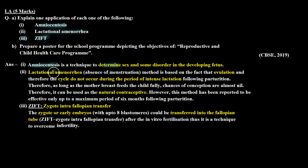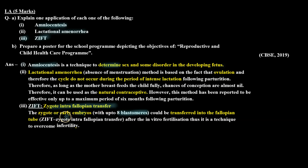Third part: ZIFT — zygote intra-fallopian transfer. This is a type of ART technique in which we carry out in vitro fertilization, meaning fusion of female and male gametes outside the female body. When the embryo develops, an embryo with up to 8 blastomeres is transferred into the female's fallopian tube for further development. So ZIFT — zygote intra-fallopian transfer — the zygote or early embryos with up to 8 blastomers could be transferred into the fallopian tube after in vitro fertilization, thus it is a technique to overcome infertility.